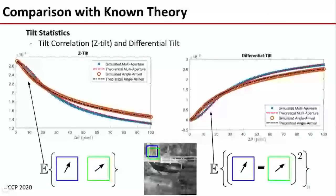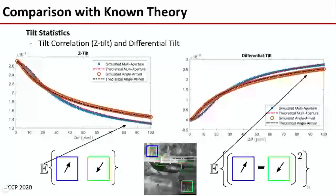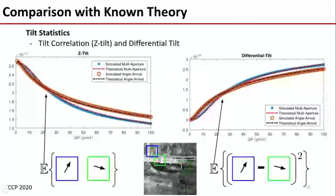The first experiment we perform is the spatial tilt statistics as a function of pixel separation. Between our approach, the multi-aperture correlations, and the angle of arrival correlations, we find a considerable match in both the tilt correlation and their differential tilt variance.